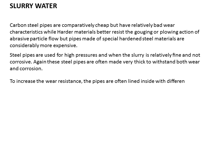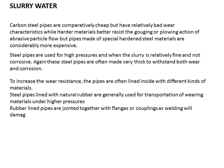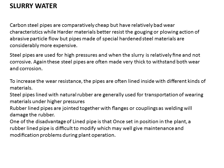To increase wear resistance, pipes are often lined inside with different kinds of materials. Steel pipes lined with natural rubber are generally used for transportation of wearing material under high pressure. Rubber-lined pipes are joined together with flanges or couplings, as bending will damage the rubber. One disadvantage of lined pipe is that once set in position, a rubber-lined pipe is difficult to modify, which may cause maintenance and modification problems. HDPE has proven to be an effective wear-resistant material for slurries.